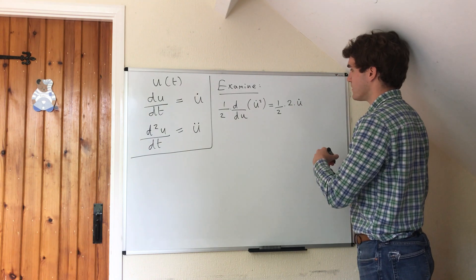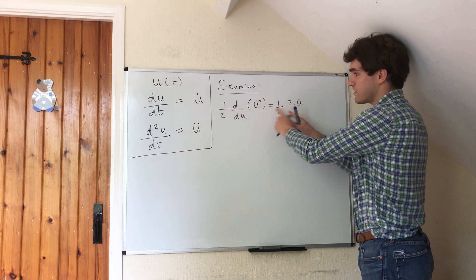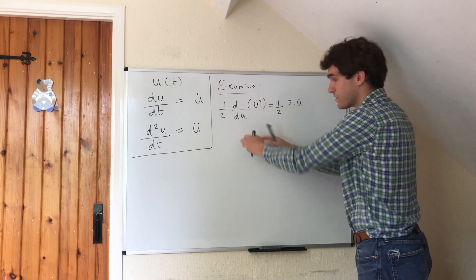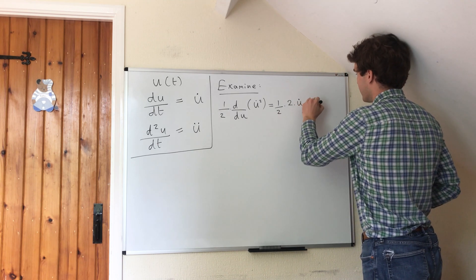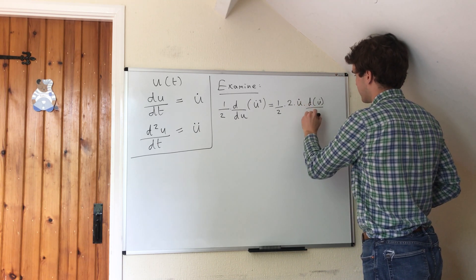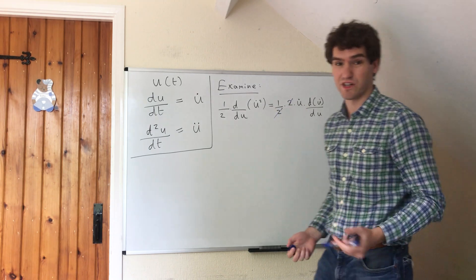However, we have differentiated this with respect to u dot, and this differential is actually with respect to u. So we now need to, by the chain rule, differentiate u dot with respect to u itself. And you can see that these two cancel each other out nicely.